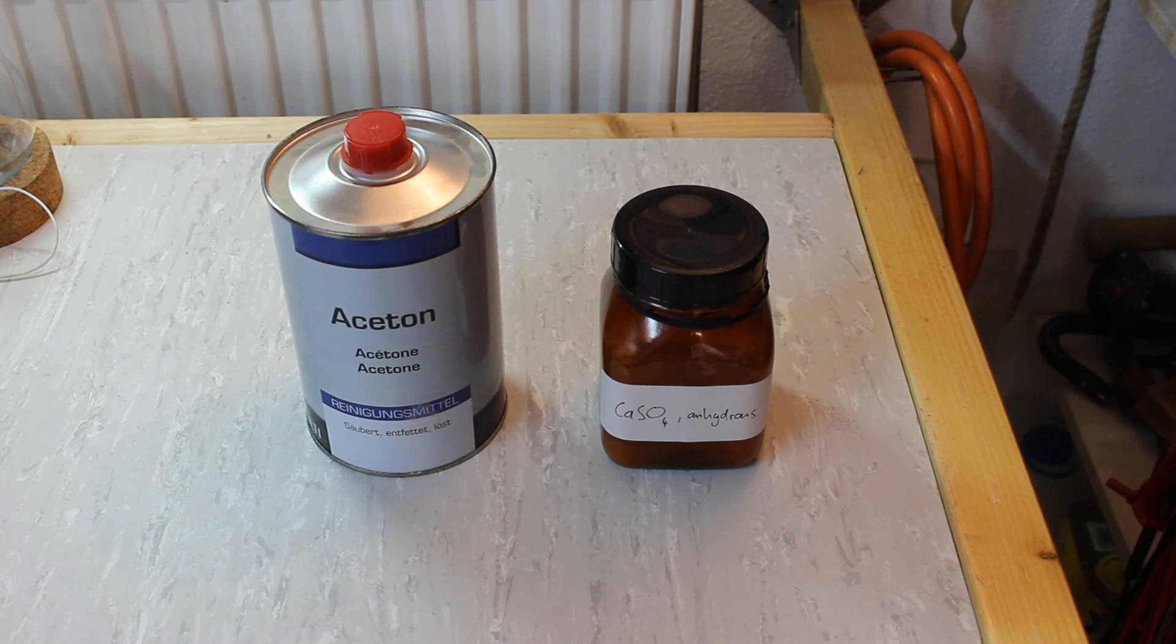Calcium sulfate is usually sold in this anhydrous form as Plaster of Paris and that's exactly how I bought it. But you never know how long it's been sitting on the shelf, so I dried it in the oven at 250 degrees Celsius for 40 minutes.